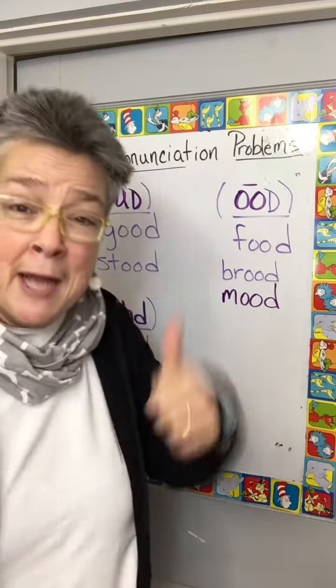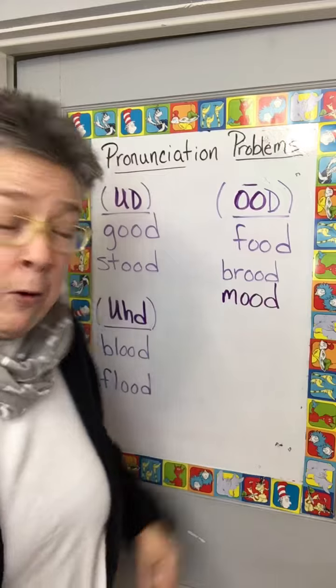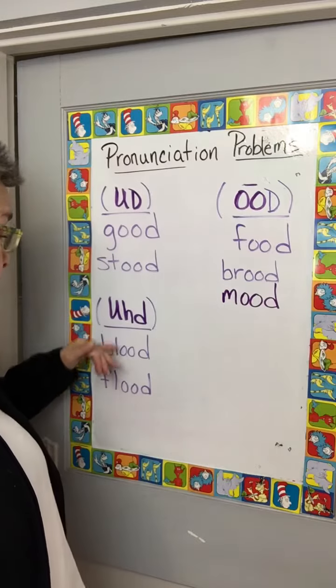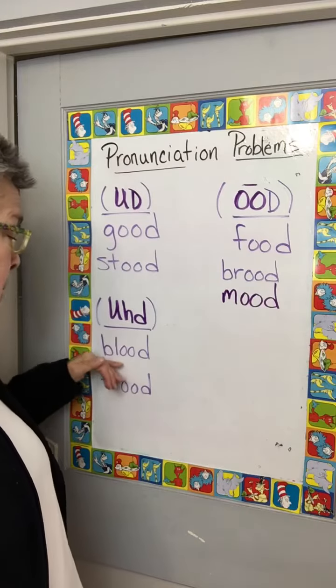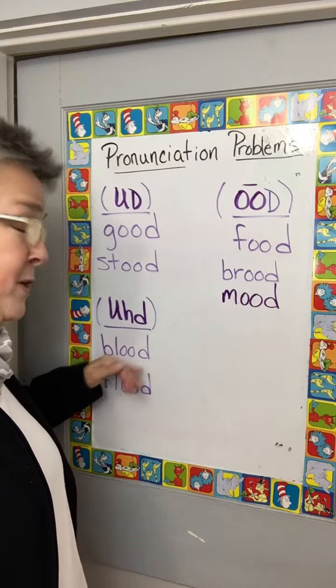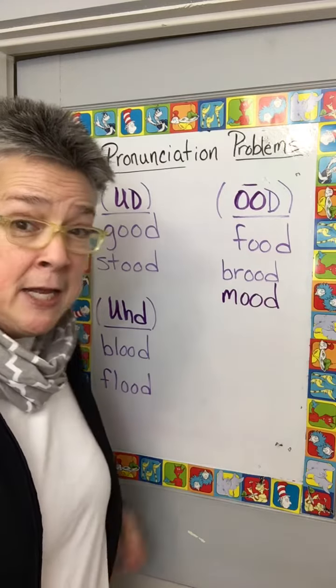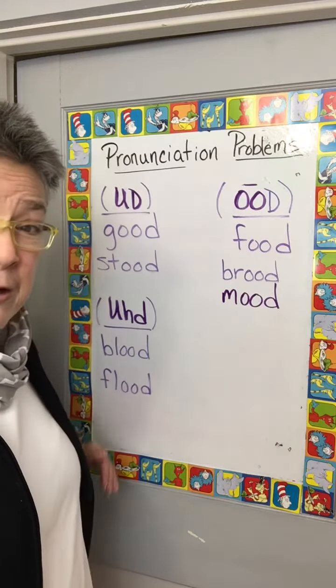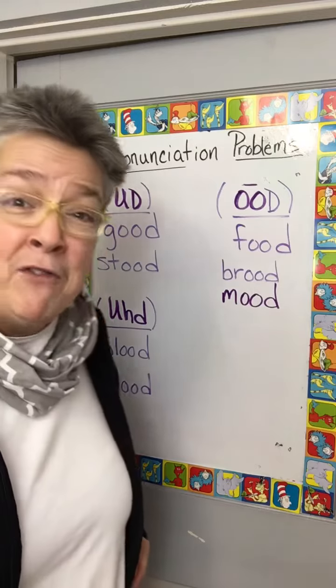Food, brood, mood. Got it. Now the third way is UD: B-L-O-O-D, blood; F-L-O-O-D, flood.